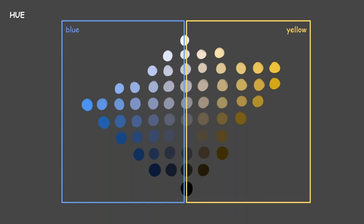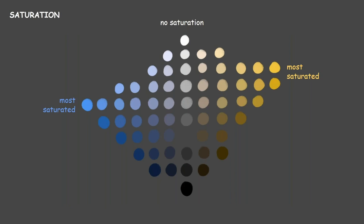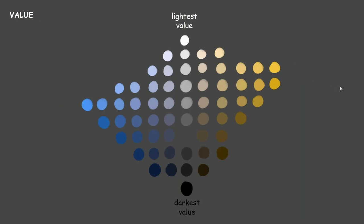For example: everything on the left side is technically blue, everything on the right side is yellow. On the left you have the most saturated blue, on the right the most saturated yellow, and the middle is where there's no saturation. This is also a really good way of visualizing temperature and how blue might transition to yellow — usually through the grays. Values run from darkest to lightest, and notably the yellow at the highest saturation is at a higher value than the blue. That basic knowledge is really important when you're drawing.